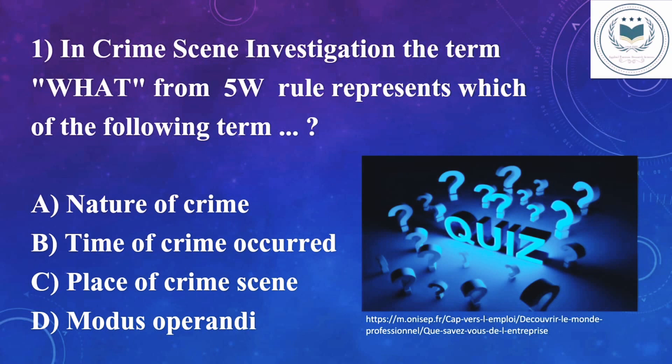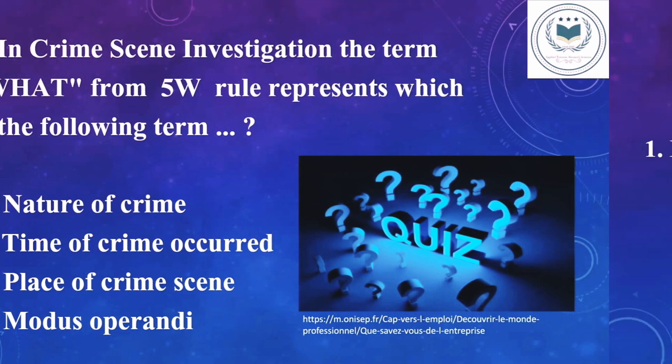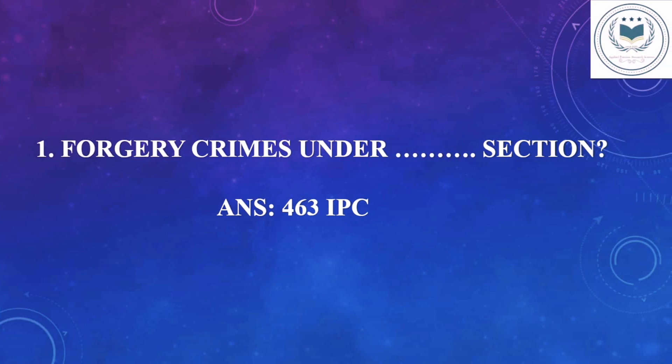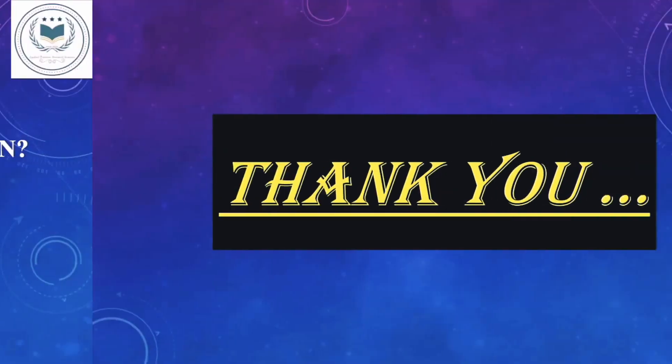It's the end of the video, so it's time to check how much you learned. The question for you all is: in crime scene investigation, the term 'what' for the 5W rule represents which of the following? A. Nature of crime. B. Time of crime occurred. C. Place of crime scene. D. Modus operandi. If you got the correct answer, please comment down below. And as you all know, in our previous uploaded video on the topic Forgery with Case Study, the MCQ question — Forgery Crimes under dash section — its answer is C, 463 of IPC.